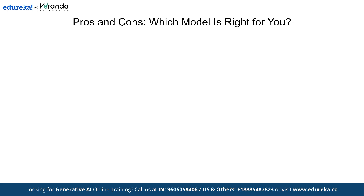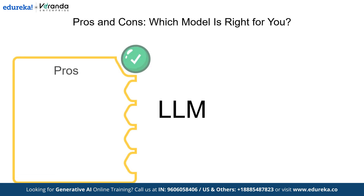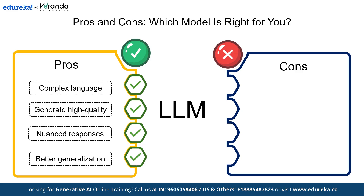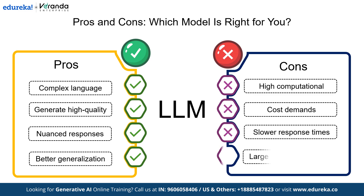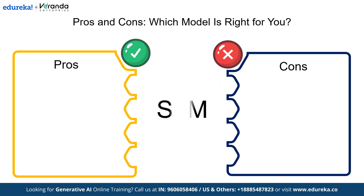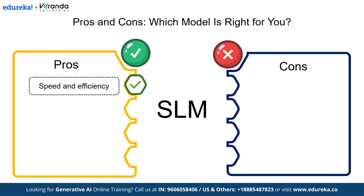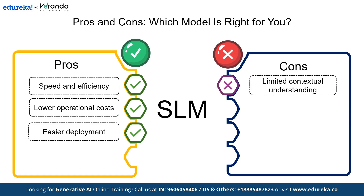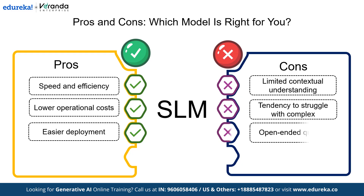Let us now look at the advantages and disadvantages of using LLMs and SLMs. The key advantages of LLMs include their superior understanding of complex language, the ability to generate high-quality nuanced responses, and better generalization across a wide range of diverse tasks. The main drawbacks of LLMs are their high computational and cost demands, along with slower response times due to their large size and complexity. SLMs offer several advantages including speed and efficiency, lower operational cost, and easier deployment even on limited resources. The primary disadvantages of SLMs are their limited contextual understanding and their tendency to struggle with complex, open-ended queries.